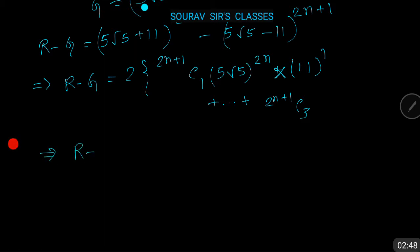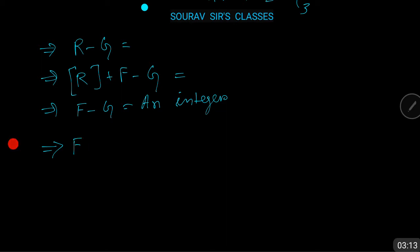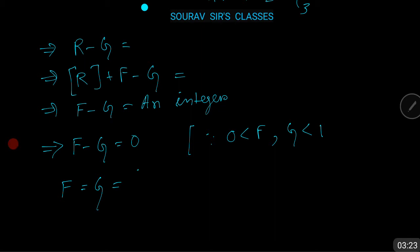That implies R - g is an even natural number. Since R = [R] + F, we get [R] + F - g equals an even natural number, implying F - g is an integer. Since 0 < F < 1 and 0 < g < 1, we get F - g = 0, so F = g = (5√5 - 11)^(2n+1). Hence the fractional part of (5√5 + 11)^(2n+1) is (5√5 - 11)^(2n+1).